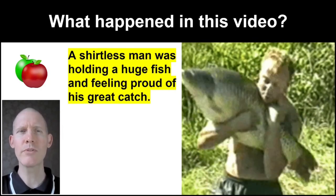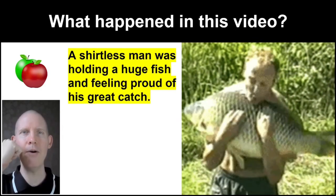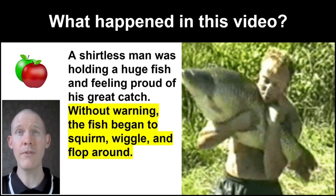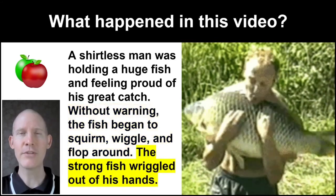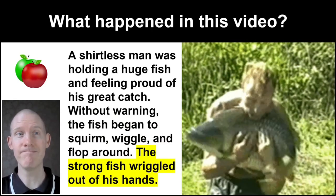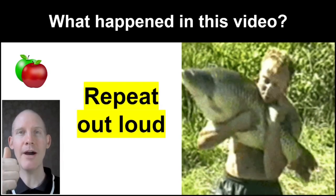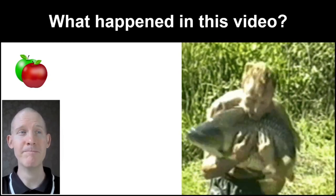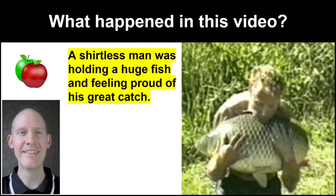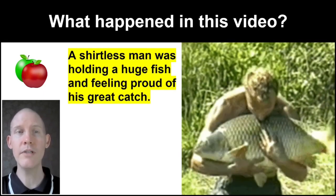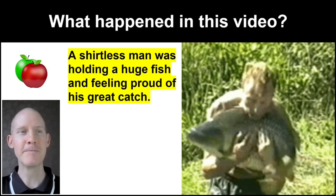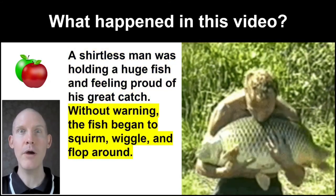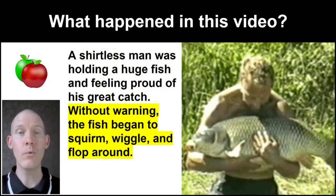A shirtless man was holding a huge fish and feeling proud of his great catch. Without warning, the fish began to squirm, wiggle, and flop around. The strong fish wriggled out of his hands. Repeat out loud: 'What happened in this video?' 'A shirtless man was holding a huge fish and feeling proud of his great catch.' 'Without warning, the fish began to squirm, wiggle, and flop around.'